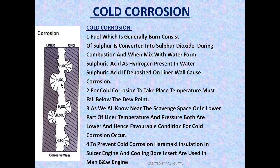This sulfuric acid causes corrosion when its temperature falls below the dew point. For cold corrosion to take place, temperature must fall below the dew point. Cold corrosion occurs on the lower part of the liner because on the top part, due to combustion, high temperature is present and cold corrosion cannot take place. But in the lower part of the liner, near the scavenge space, the temperature falls below the dew point and cold corrosion occurs.